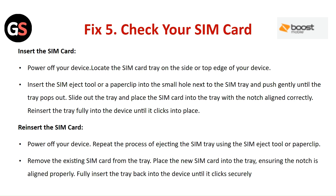To re-insert the SIM card, power off your device and repeat the process of ejecting the SIM tray using the SIM ejection tool or paper clip. Remove the existing SIM card from the tray and place the new SIM card into the tray, ensuring the notch is aligned properly. Fully insert the tray back into the device until it clicks securely.